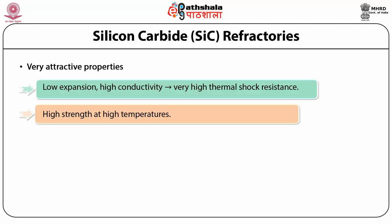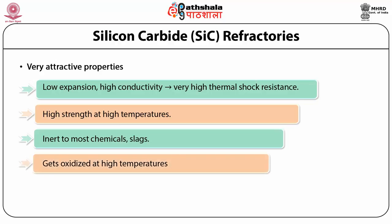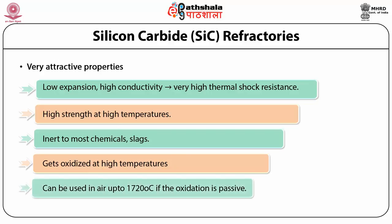Silicon carbide retains high strength at high temperatures and has high fracture toughness. It is inert to attack from most chemicals and slags. Its only drawback is that it oxidizes slowly in an oxidizing atmosphere. It is still possible to use it in air up to quite high temperatures — up to 1720°C under certain conditions — and almost up to its dissociation temperature of 2400 to 2700°C in inert atmospheres.